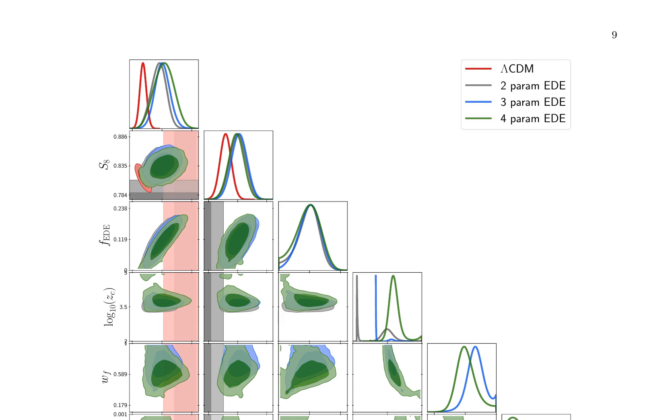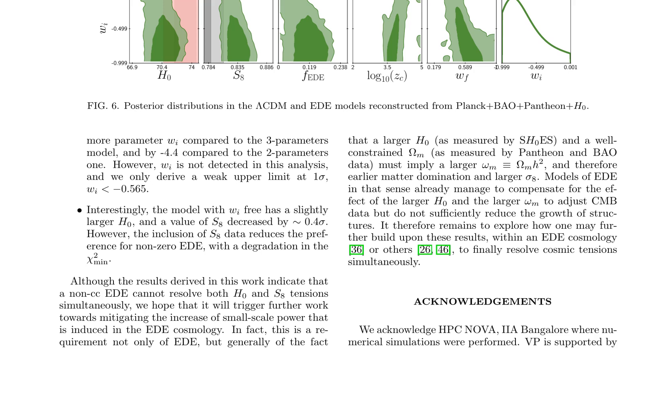The analysis focuses on posterior distributions in the lambda-cold dark matter (lambda-CDM) and extended dark energy (EED) models, utilizing Planck plus BAO plus Pantheon plus H0 data. It highlights the inclusion of the W parameter, which, despite not being detected, yields a weak upper limit at 1 sigma: WI less than negative 0.565. The model with a free W parameter shows a slightly larger H0 and a decreased value of S8 by approximately 0.4 sigma. However, incorporating S8 data reduces the preference for non-zero EED, with a degradation in the chi-squared minimum. The results indicate that a non-cosmological-constant EED cannot resolve both H0 and S8 tensions simultaneously. The discussion emphasizes the need for further work to address the increase in small-scale power in EED cosmology and explores avenues for resolving cosmic tensions simultaneously.